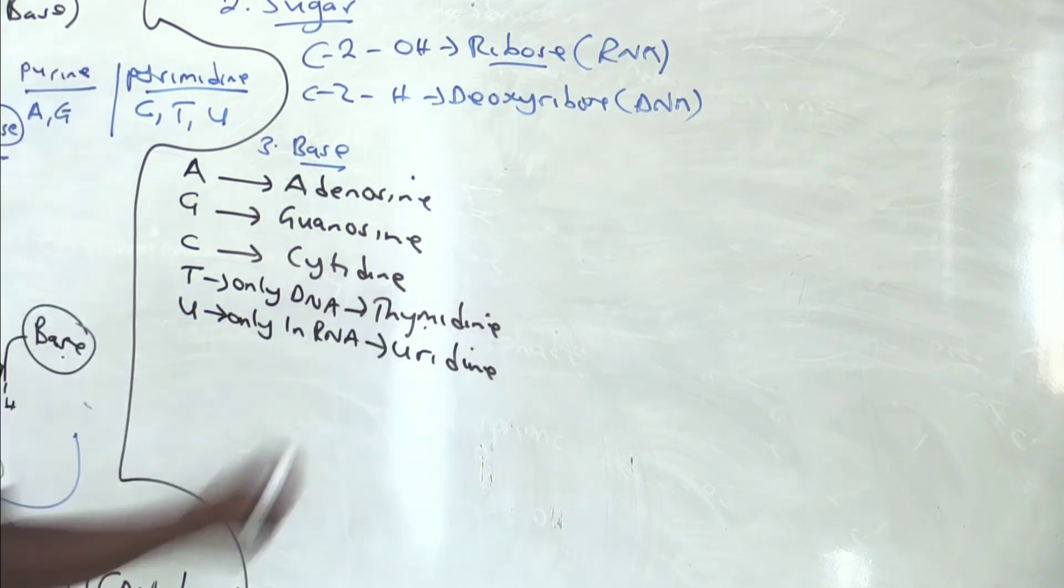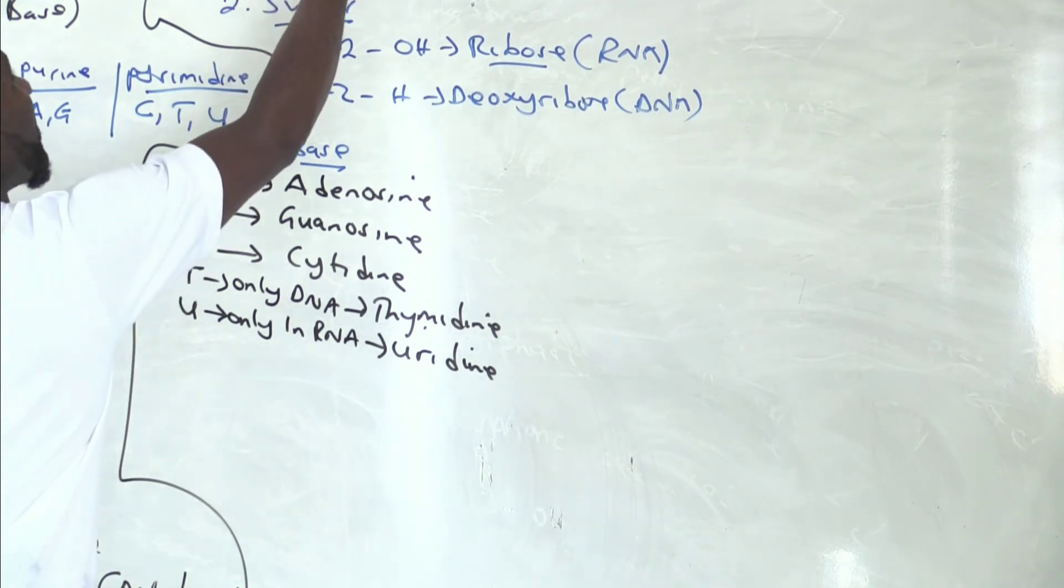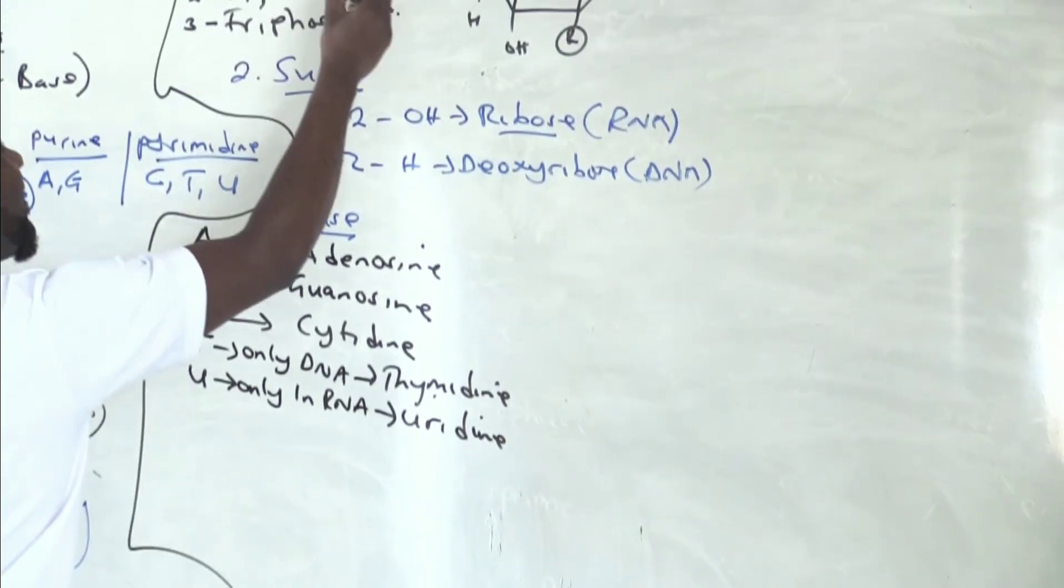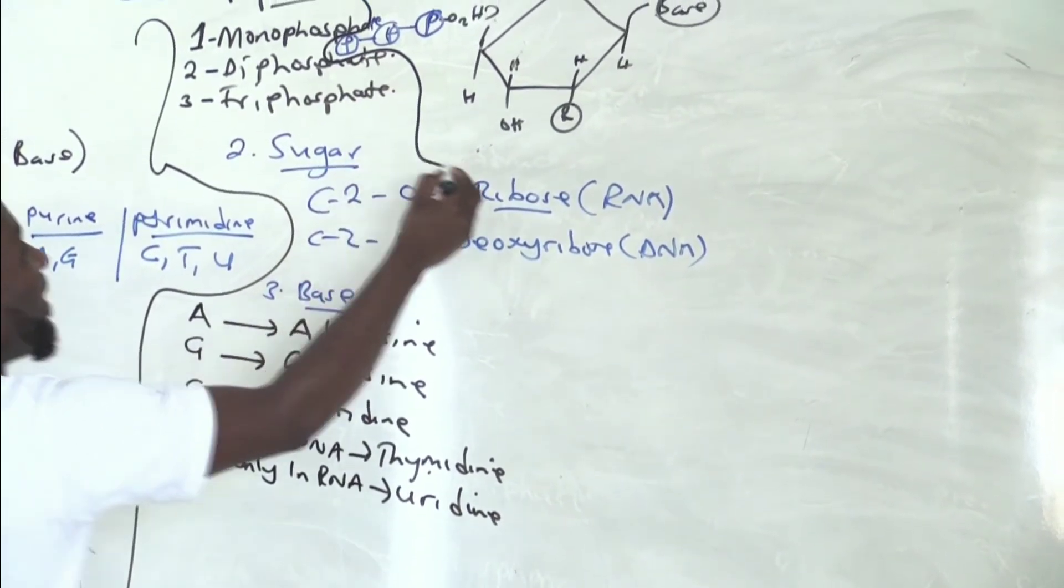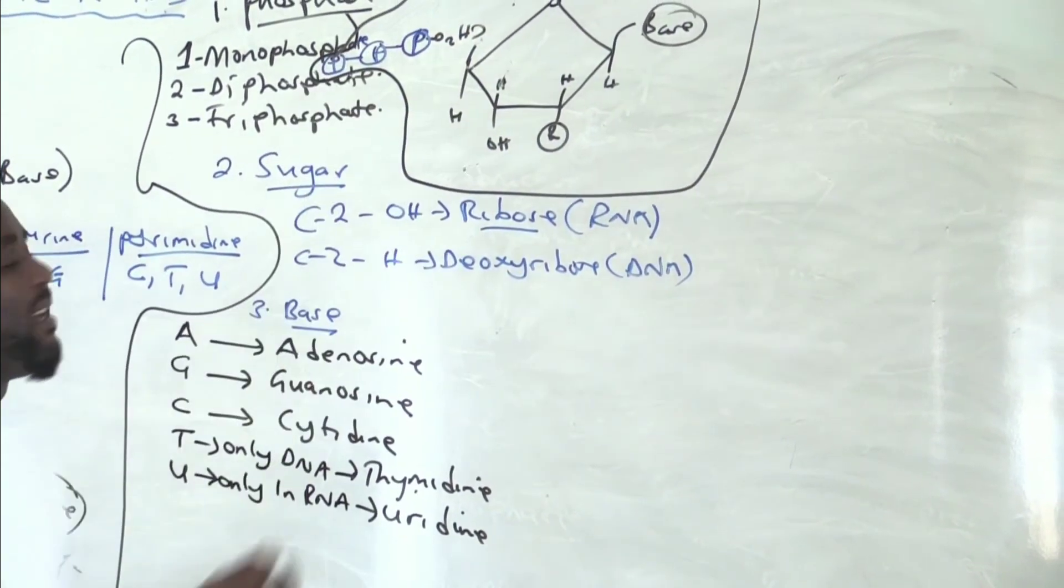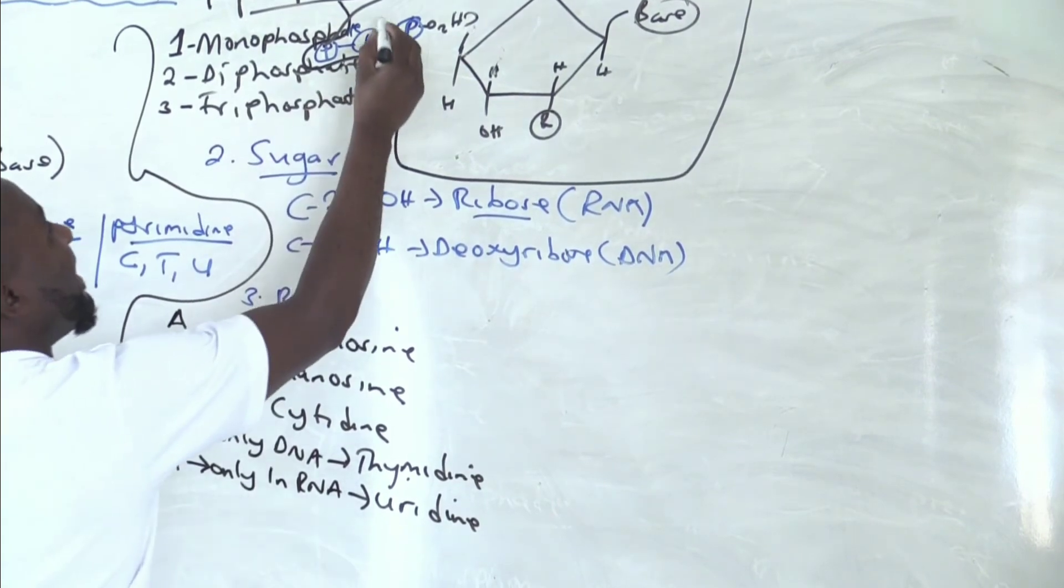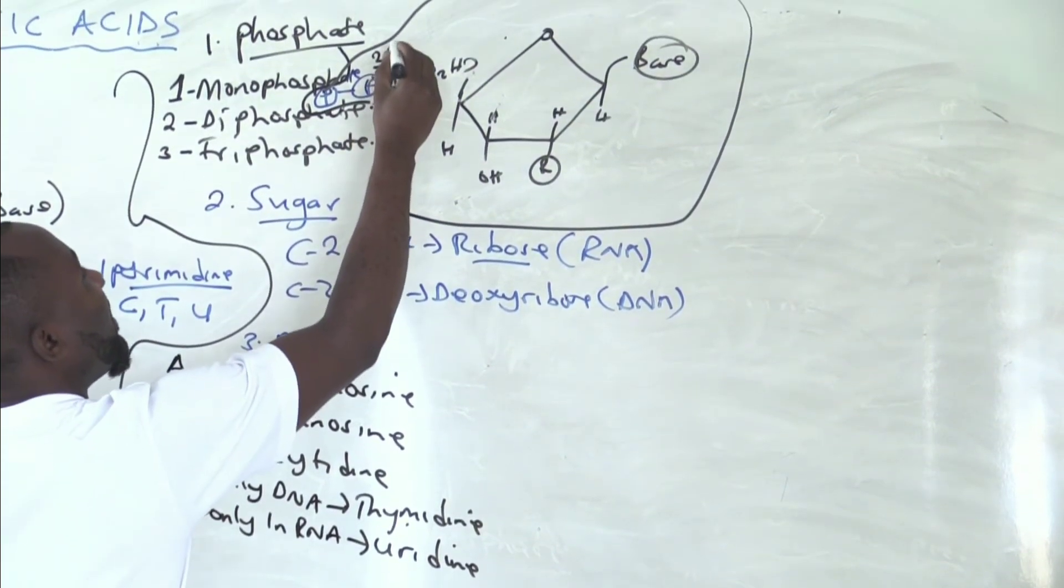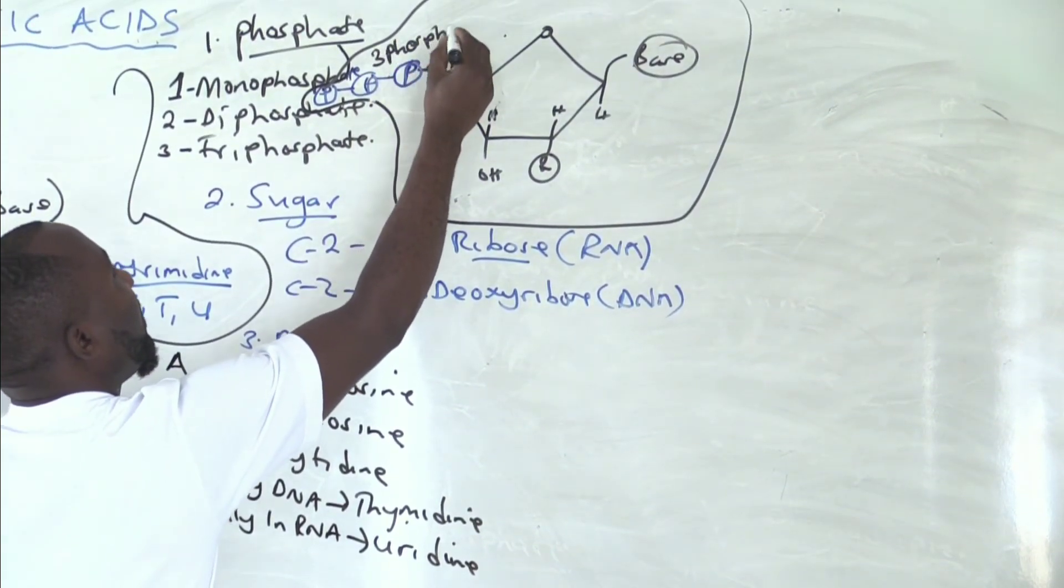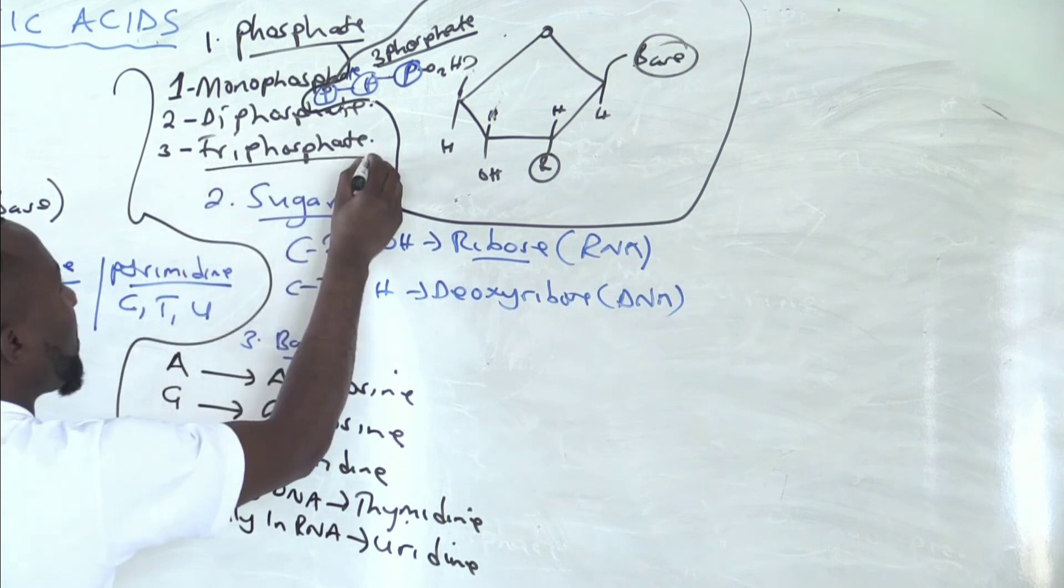Now, for us to understand this nicely, I want you to focus on the structure here. This structure. When you look at this structure here, how many phosphates did I attach? There are actually three phosphates. What is the name given to three phosphates? Triphosphate.